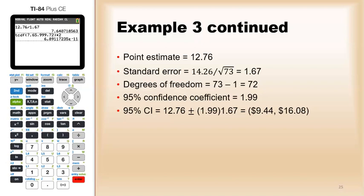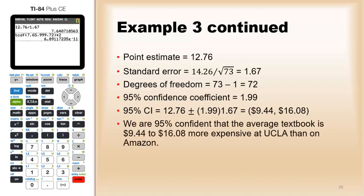Now, since this was defined between UCLA minus Amazon, the fact that both these numbers are positive tells me that UCLA is more expensive on average by an average of 944 to $16 per book. So, we are 95% confident that the average textbook is 944 to 1608 more expensive at UCLA than in Amazon.